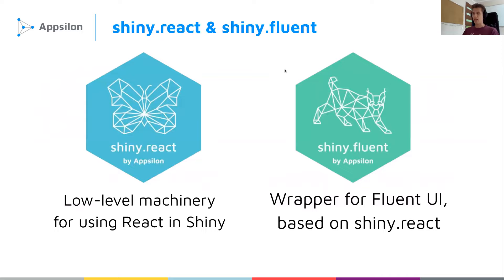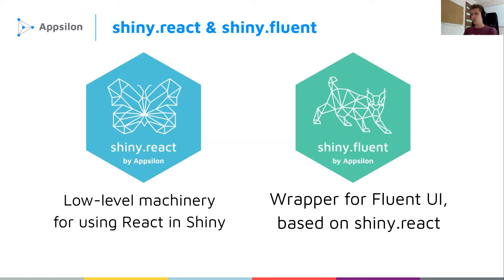The two packages I'll be speaking about are shiny react and shiny fluent. I won't talk too much about shiny react because it's a low-level package — it's the machinery that allows you to use React in Shiny, which was quite a big challenge since React is a very different technology. Shiny fluent is built on top of shiny react and is basically a wrapper for Fluent UI, making it easy to use from R and Shiny so you can feel at home if you know those technologies.